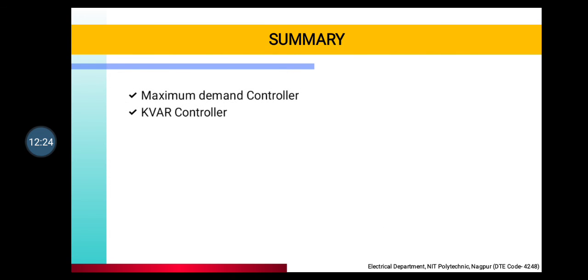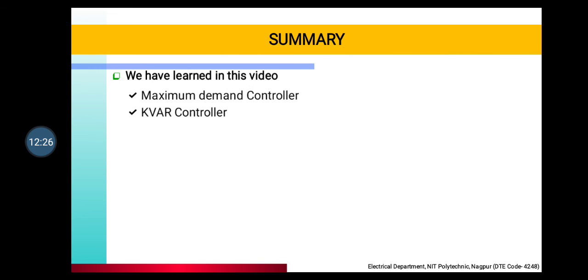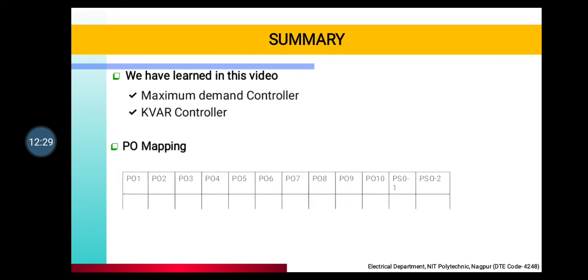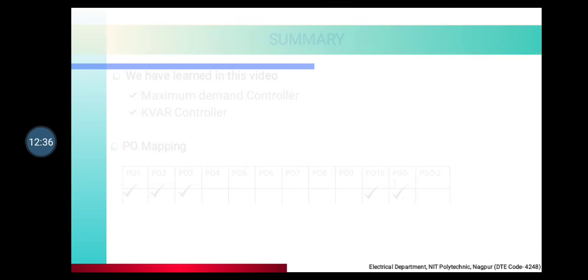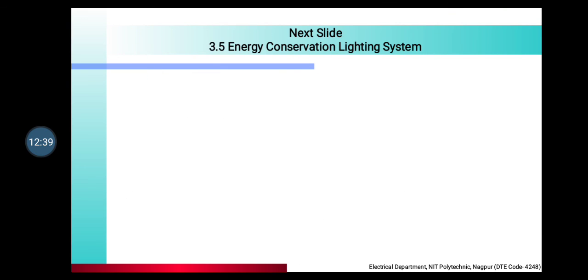In summary, you have learned about Maximum Demand Controller and KVR Controller. PO mapping: PO 1, 2, 3, 10, and PSO 1. The next slide will be on energy conservation in lighting systems. Thank you.